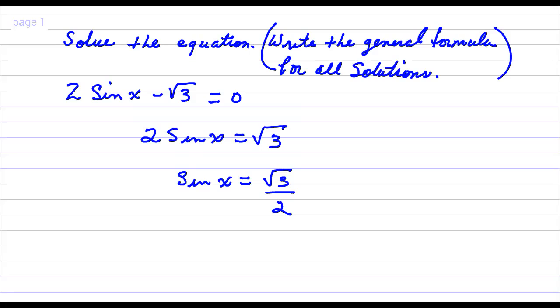So if you look on your unit circle, the sine of pi over 3 gives us the square root of 3 over 2, and also the sine of 2 pi over 3 also gives us a solution.